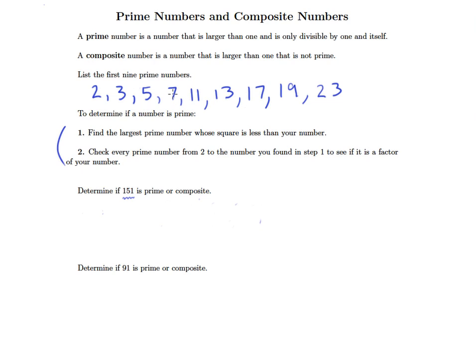So the largest prime number whose square is less than 151. Seven squared is 49, so we need to get bigger because 49 is a lot less than 151. Let's try 11 squared - that's 11 times 11, which is 121. 121 is less than 151, but we want to know if there's another prime that's bigger whose square is less than 151. Let's try 13, and that's going to give us 169. That's too large. So it turns out that 11 is the largest prime number that has a square that is smaller than 151.